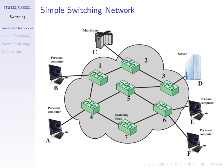This network allows our six stations to communicate with any other station without cables between each pair. Every station has a single cable into a switching node, and then the switching nodes are connected together — though not all connected in this example. If A wants to send data to F, one approach: A sends to switch 4, switch 4 sends to switch 7, switch 7 sends to switch 6, which sends it to F. Switches 4, 7, and 6 simply forward the data on.